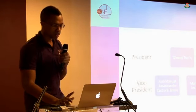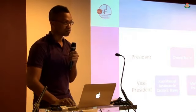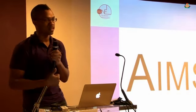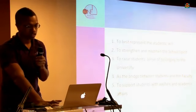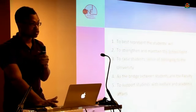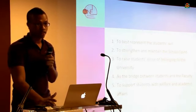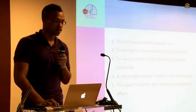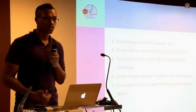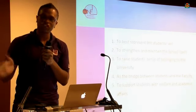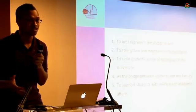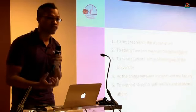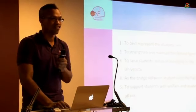In the Supervisory Committee there are three main people: the president Chung Ta Pu, and two vice presidents, Zhao and Imran. When we do events and activities, our goals for this year can be summarized in five points: best represent the students' will, strengthen and maintain school spirit, raise students' sense of belonging to the university, act as a bridge between students and faculty, and support students with welfare and academic affairs. A lot of information about these activities will come through email, so you must check your email — do not go halfway through the year ignoring school emails, as there are many things beneficial to you.